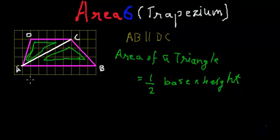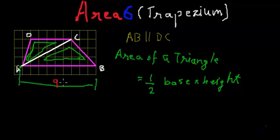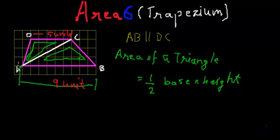So let's talk about the base of these triangles. For triangle ABC, the base has nine unit squares along it, so the length of the base is nine units. Similarly, if we talk about the base of triangle ADC, the base is five units. Now, what about the height? The height is the length of the perpendicular drawn from one point to the base of the triangle.